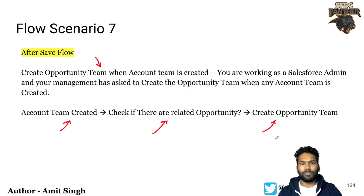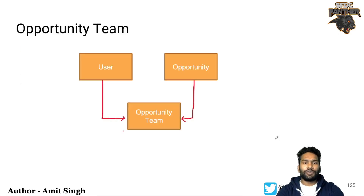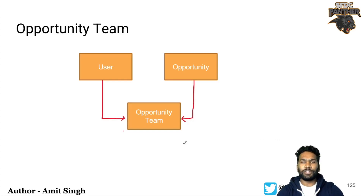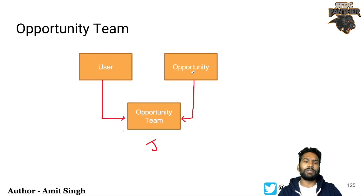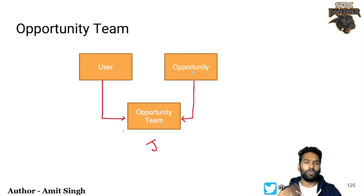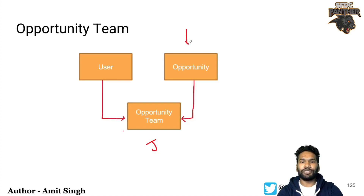First, let's talk about what an opportunity team is. The opportunity team is a junction object between a user and an opportunity. It is a list — or group — of users who are working together in order to close an opportunity, so that a pending sale or pending deal can be converted. The opportunity is the master and the opportunity team is the child.